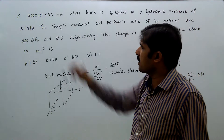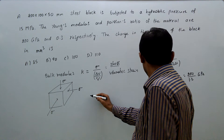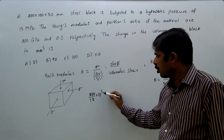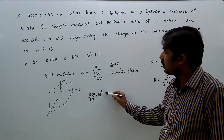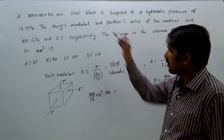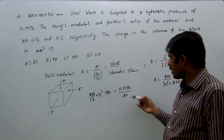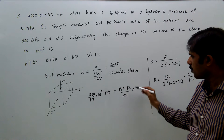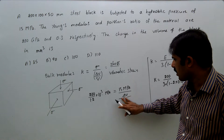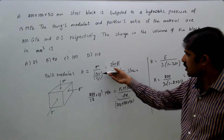Now substituting into the bulk modulus formula: pressure is given as 15 megapascals, and the volume is also known. So K equals sigma divided by (ΔV / V). K is 200/1.2 gigapascals — converting, that is (200/1.2) × 1000 megapascals. Sigma is 15 megapascals, and the original volume is 200 × 100 × 50. We substitute these values to find ΔV.